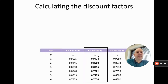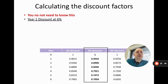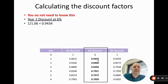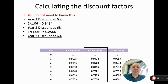You don't need to know this, but for interest: the discount factors come from a formula. At six percent, the year one discount factor is 1 ÷ 1.06 = 0.9434. Year two is 1 ÷ 1.06², and for the nth year it is 1 ÷ 1.06 to the power of n. That's where those table values come from.